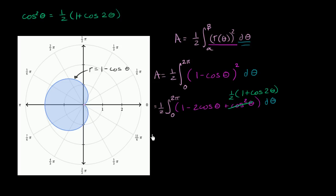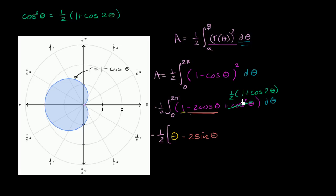This is going to be equal to one half. Now let's start taking antiderivatives. The antiderivative of 1 with respect to θ is just θ. The antiderivative of −2cos(θ) is −2sin(θ). Now, distributing the ½, cos²(θ) becomes ½ + ½cos(2θ). So the antiderivative of ½ is ½θ.